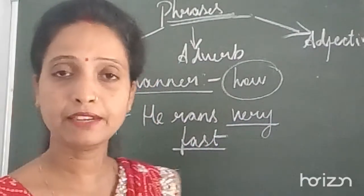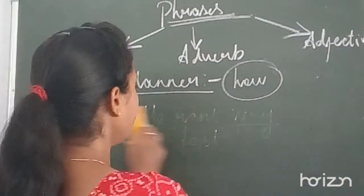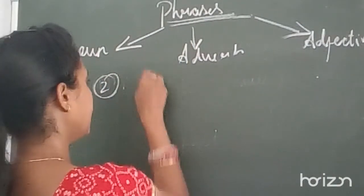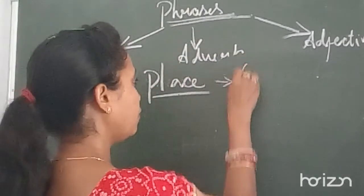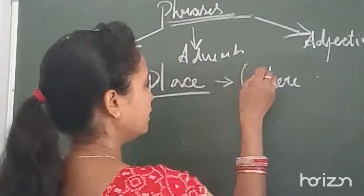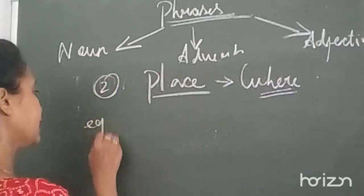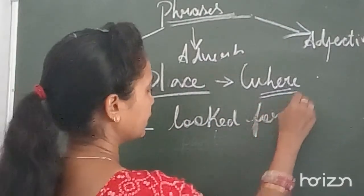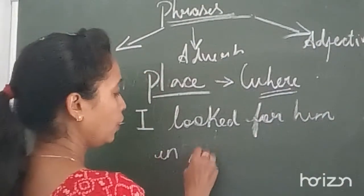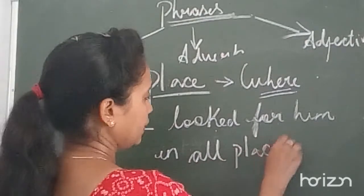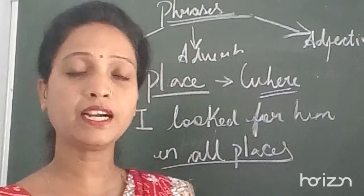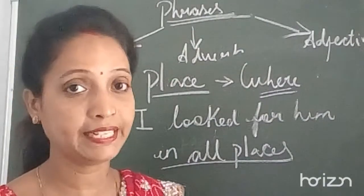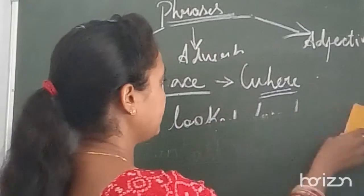Ab hum baat kar lete hain adverb of place ke baare mein. Adverb of place gives you the answer of 'where.' Yeh 'where' ke baare mein aapko answer deta hai. For example: I looked for him in all places — 'in all places' is the adverb of place because it tells you where we looked for him.